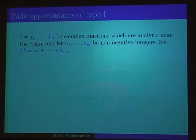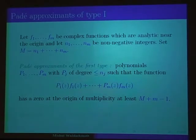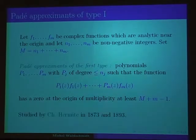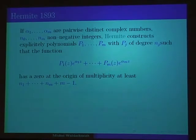The type 1 is, to a certain extent, the dual of type 2. Again we have functions f₁ up to fₘ, analytic near the origin, and non-negative integers. The question is to find polynomials p₁, ..., pₘ of bounded degree so that the linear combination has a zero at the origin of sufficiently large multiplicity. In type 2 we considered simultaneous approximation; here we are interested in linear forms in the fᵢ. Hermite himself solved this problem for the exponential function already in 1873, and again in 1893, obtaining the complete solution with explicitly given polynomials. Further, in 1917, he gave integral formulae for the remainder.